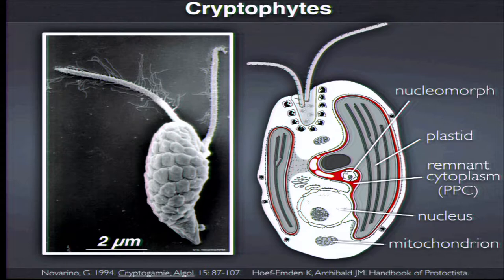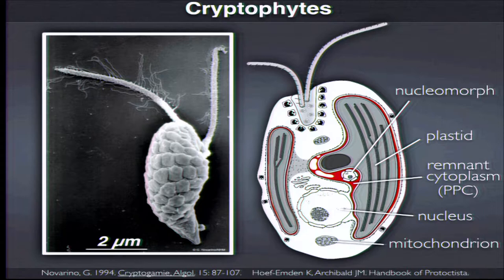The second lineage of nucleomorph-bearing algae are the cryptophytes, which have an endosymbiont, nucleomorph, and plastid derived from a red algal cell. These cells are very complex in nature: they have four DNA-containing compartments and two distinct cytoplasmic compartments — including a residual cytoplasmic compartment called the PPC — in which core eukaryotic cellular processes are taking place.